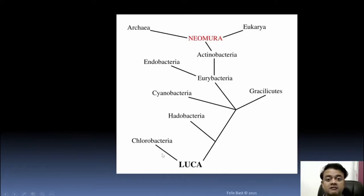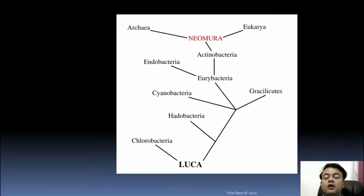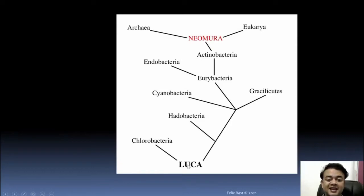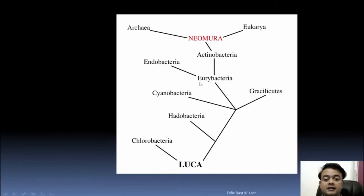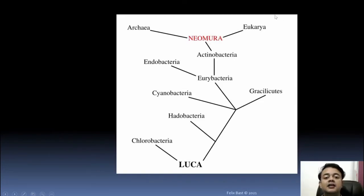From LUCA, one of the earliest splitters is Chlorobacteria, which is still an active lineage today — studying Chlorobacteria can give clues about the first life on Earth, similar to the Urey-Miller experiment. Subsequently, many Eubacterial clades originated: Hadobacteria, Gracilicutes, Uribacteria, Cyanobacteria — still a major plankton group (e.g., Prochlorococcus) — Uribacteria, Endobacteria, Actinobacteria, and from Actinobacteria, Neomura originated, from which Archaea and Eukarya diverged.